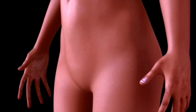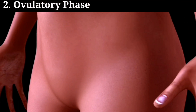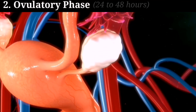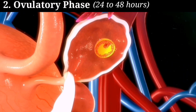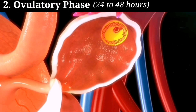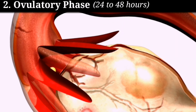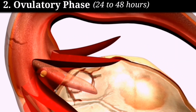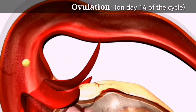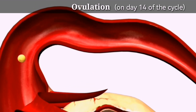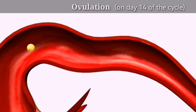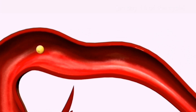The ovulatory phase is the second stage and lasts for around 24 to 48 hours. During this phase, an egg is released from one of the ovaries and travels down the fallopian tube towards the uterus. This is the phase where conception can occur.